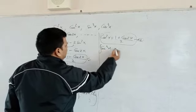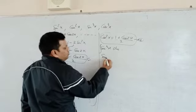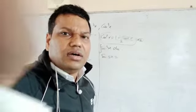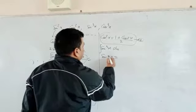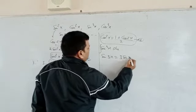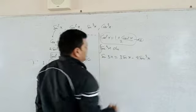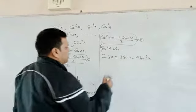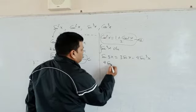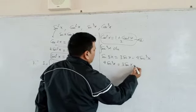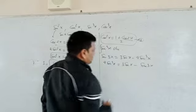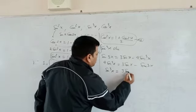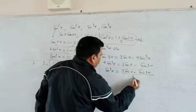Now, if we are going to integrate sin³x, first of all we should know the formula for sin3x, which is sin3x = 3sinx − 4sin³x. So, rearranging: 4sin³x = 3sinx − sin3x, which means sin³x = (3sinx − sin3x)/4. We have to change sin³x into this form, and then we can integrate easily.